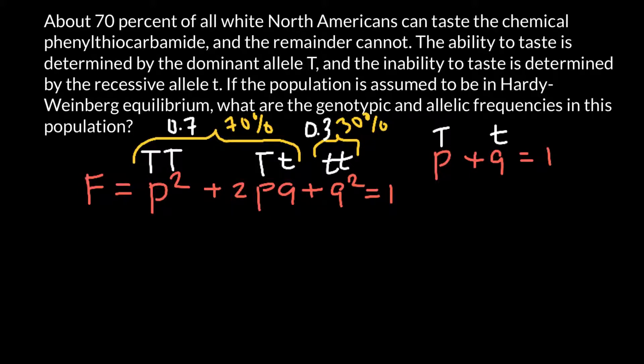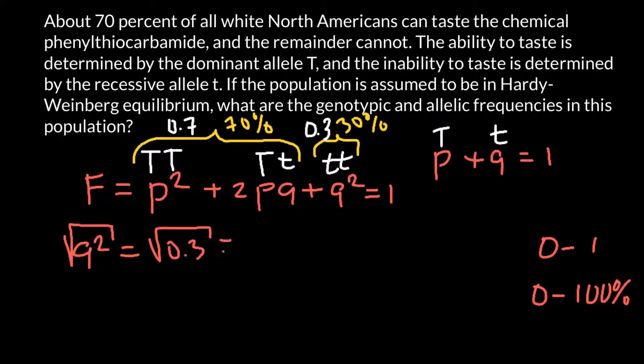We're doing our calculations on the scale between 0 and 1, which is equal to 0 and 100% on the scale of percentages. What we can do is find q by taking the square root from q squared. We know that q squared equals 0.3, so let's take the square root of 0.3. The rounded number would be 0.55. This equals q.